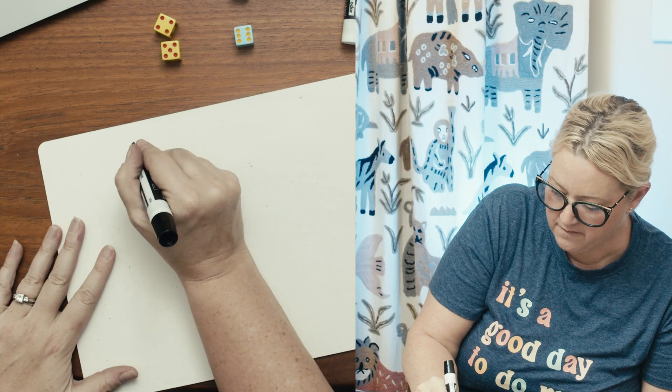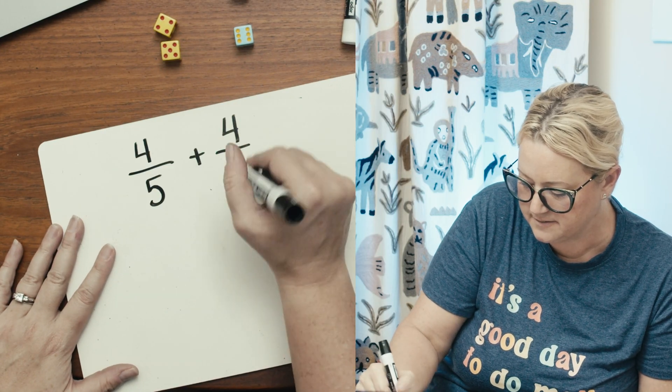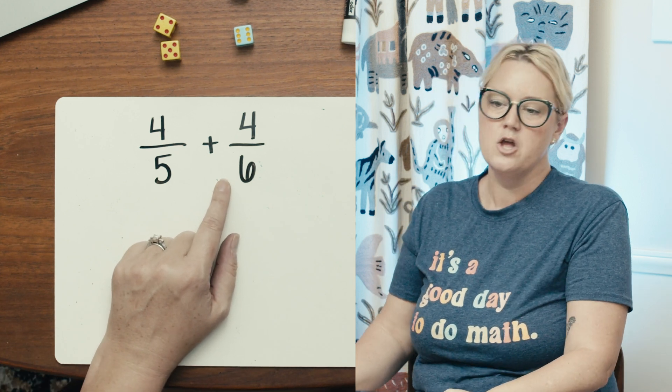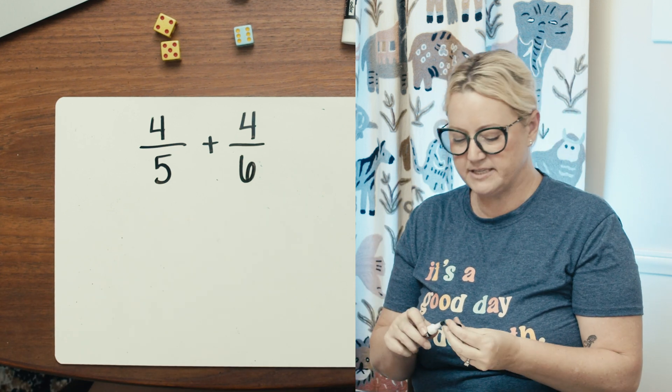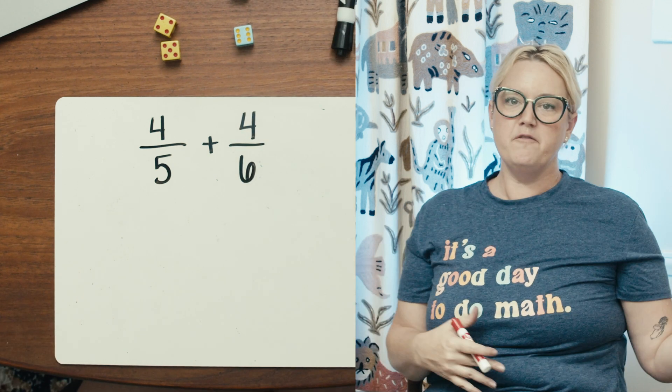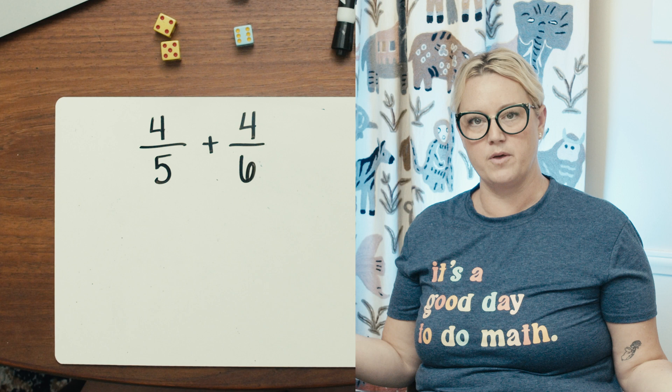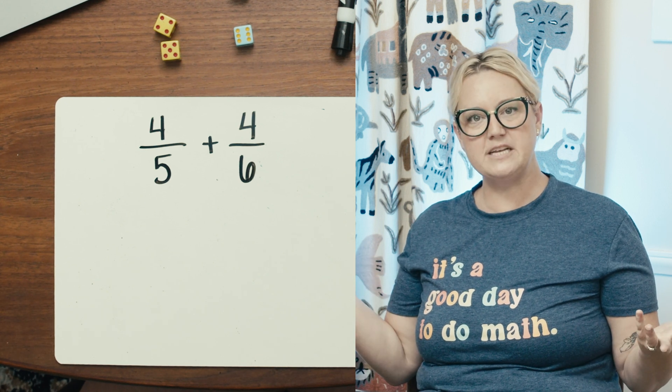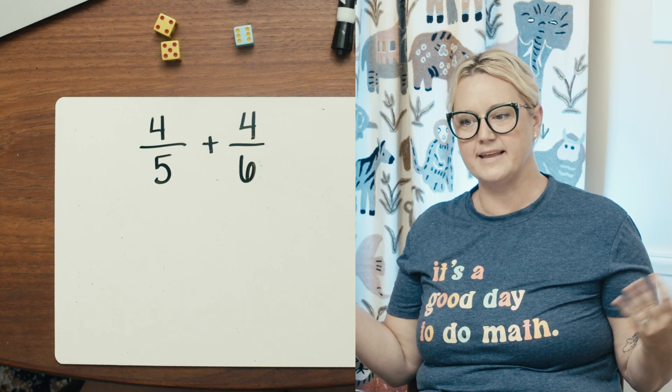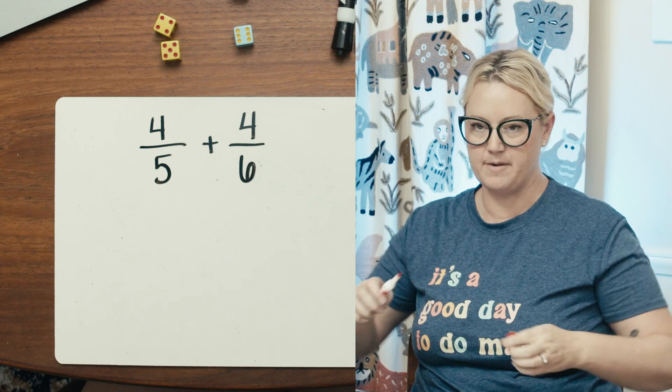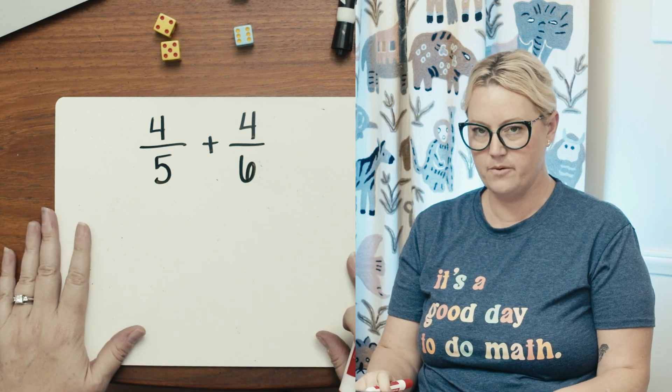So four over five plus four over six. More than likely, you wouldn't be given this four over six. You would be given two over three. You could simplify it now, but I'm just going to jump right in because whether you simplify first or simplify last, it doesn't make a difference in what you end up with at the solution. Sure, you might be dealing with bigger numbers, but ultimately it's okay. It's all fine. I know people are going to be upset that I'm not simplifying this first, but I don't want to.